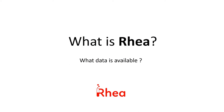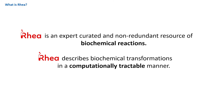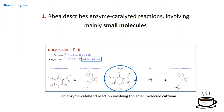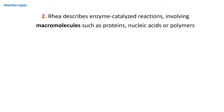What is RIA and what data is available? RIA is an expert curated and non-redundant resource of biochemical reactions. It describes biochemical transformations in a computationally tractable manner. More precisely, RIA describes enzyme-catalyzed reactions mainly involving small molecules such as caffeine in this example, but it also describes enzyme-catalyzed reactions involving macromolecules such as proteins, nucleic acids or polymers.